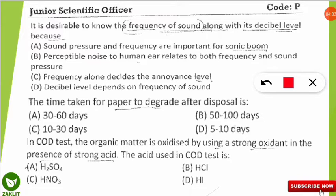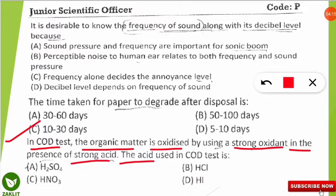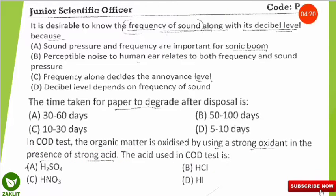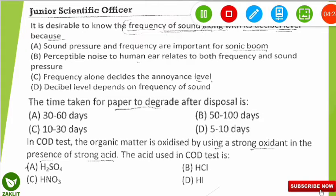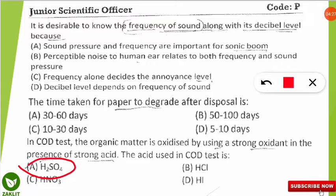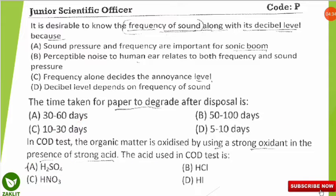The next question also comes from the COD test. In the COD test, organic matter is oxidized using a strong oxidant in the presence of a strong acid — which acid is used? The correct option is A: sulfuric acid (H₂SO₄) is used as the acid in the COD test, along with strong oxidants like KMnO₄, potassium iodate, and others.